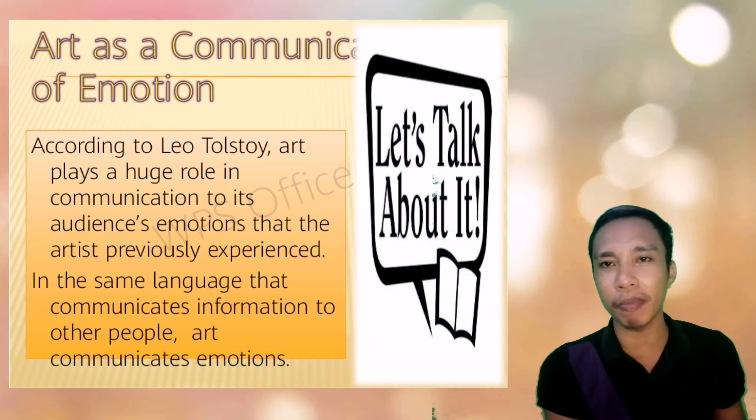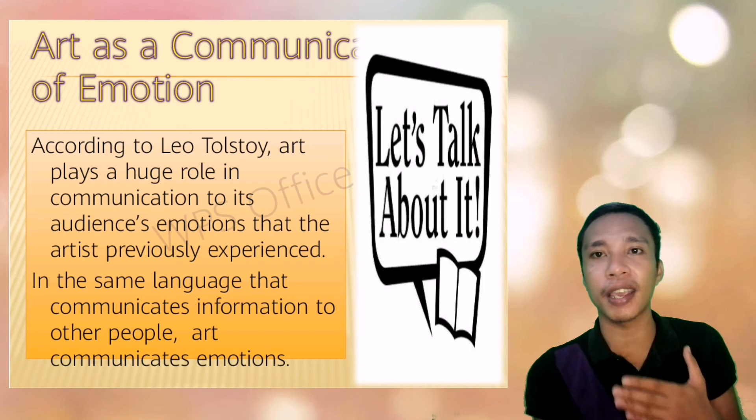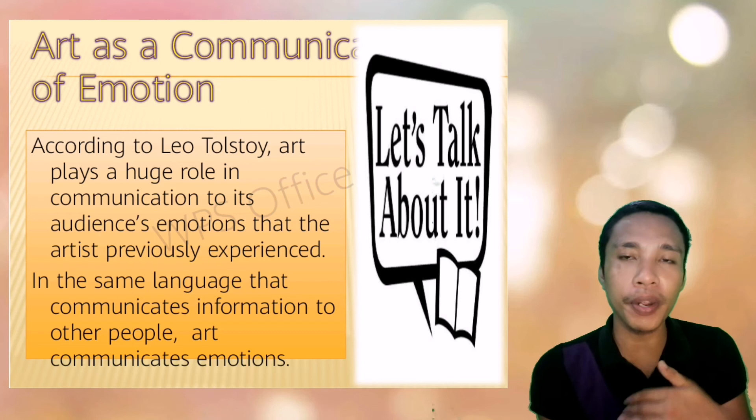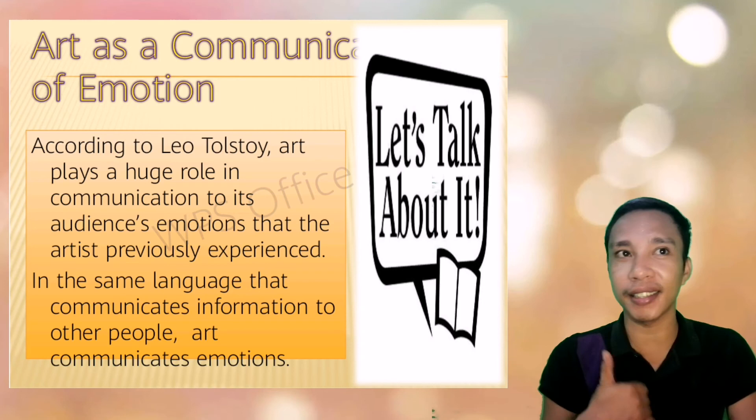Art communicates emotions — the artist lets us feel his emotion. If he's sad, through his artwork, we also feel sad. If he's happy, through his masterpiece, we feel happy. To summarize, art as an imitation is associated with Plato; art as a representation with Aristotle; art as a disinterested judgment with Immanuel Kant; and art as a communication of emotion with Leo Tolstoy.